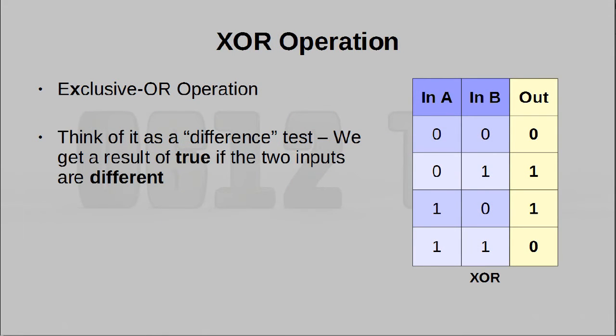Then we have XOR. Now XOR stands for exclusive OR. And it works just like the OR operation, but it is exclusive in nature. So what that means is, if both the inputs are true, your output is false. So you can think of this as sort of a it needs to be different kind of check. If the two inputs are different, the output is 1. If the two inputs are the same, the output is 0.